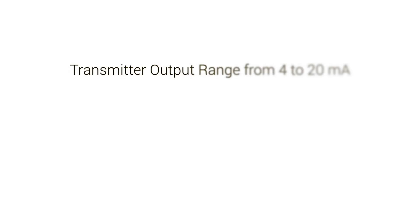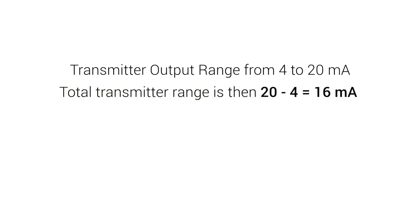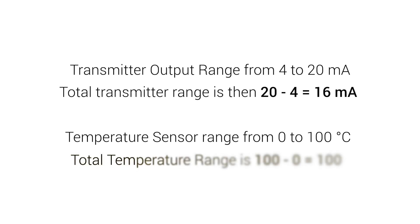The temperature transmitter has an output in the range from 4 to 20 milliamp, so the total transmitter range is 20 minus 4 equals 16 milliamp. The temperature sensor has a temperature range from 0 to 100 degrees Celsius, so the total temperature range is 100 minus 0 equals 100.